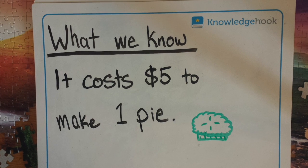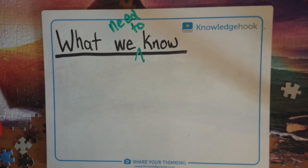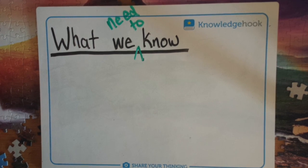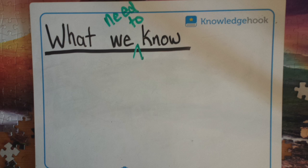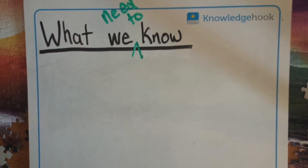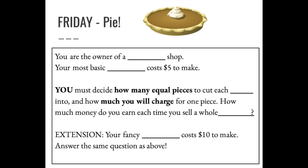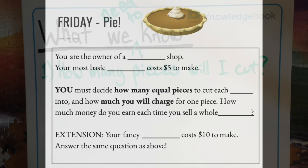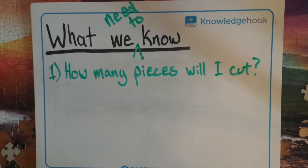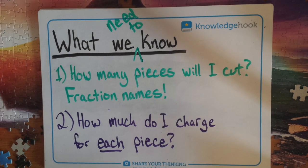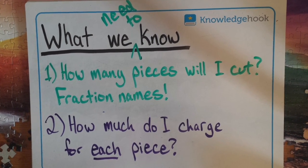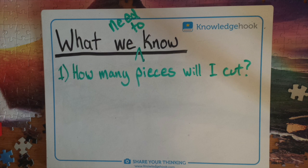The rest is up to you. So now we ask: what do we need to know, or what information does the question ask from us? I'll show you the question one more time — think about it for about 10 seconds, or pause if you need to. The question asks us to decide how many pieces will I cut, and how much will I charge for each piece. We're going to go one question at a time, starting with how many pieces will I cut.